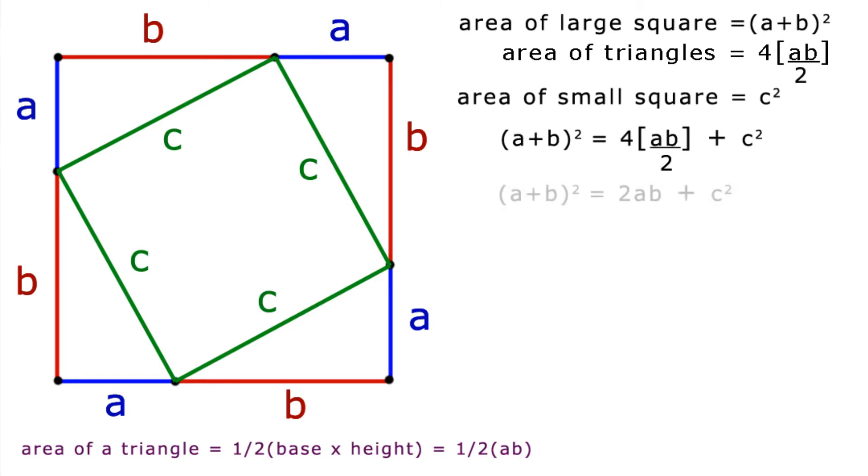Canceling the four and the two on the right, we get A plus B all squared equals 2AB plus C squared. Moving the 2AB from the right to the left and changing the sign, we have A plus B all squared minus 2AB equals C squared.